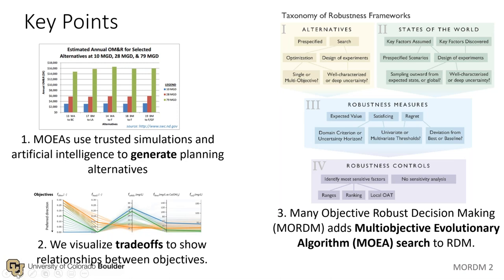Looking at the taxonomy on the right-hand side of the screen, developed by John Herman and others, it shows what each of these RDM methods has in common. As David mentioned, there are different flavors of these bottom-up decision-making approaches. The real focus here is on the creation of alternatives — the yellow box — and how we use MOEAs to create alternatives, and what we do with multiple decision objectives. MOEAs are optimization tools that use trusted simulations and artificial intelligence to generate planning alternatives. We also visualize trade-offs in a different way using parallel coordinate plots.